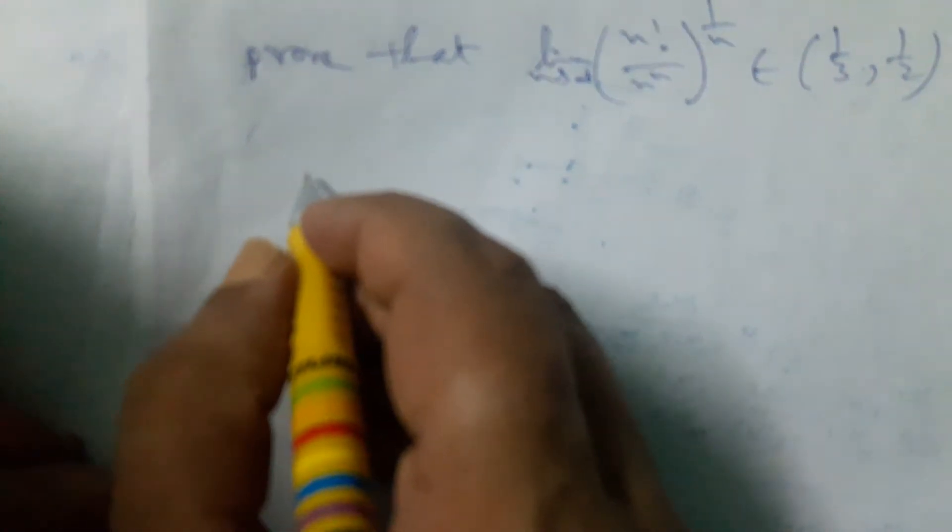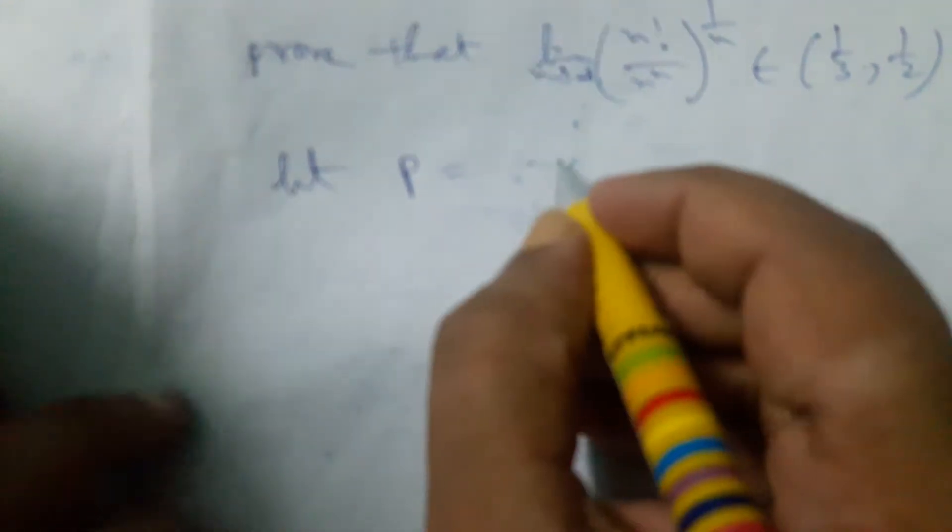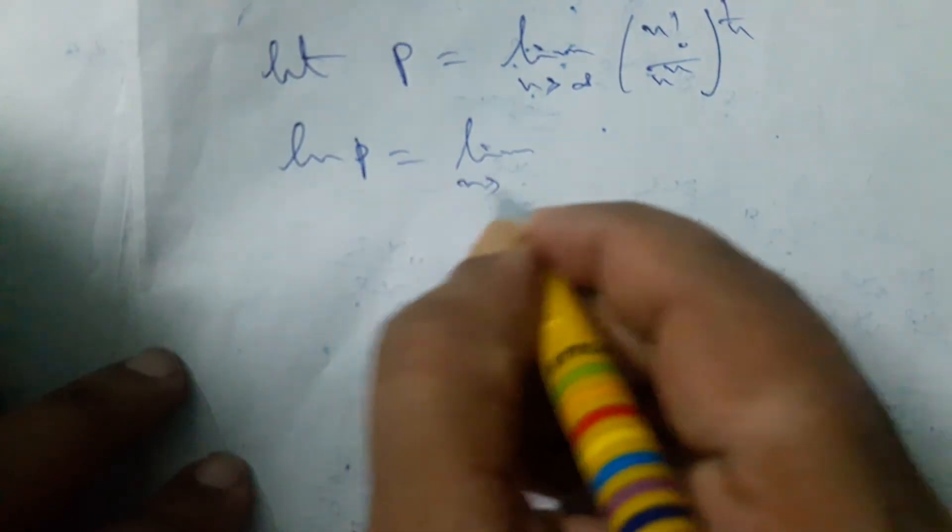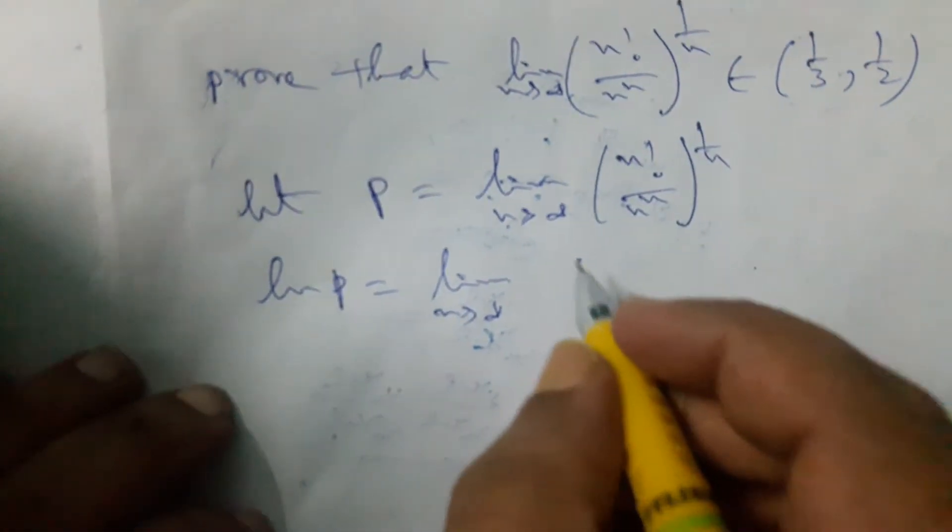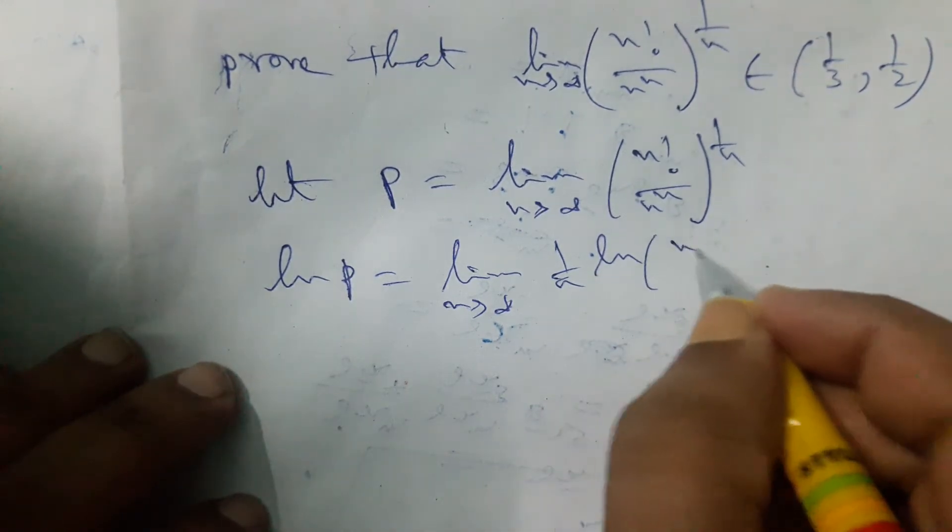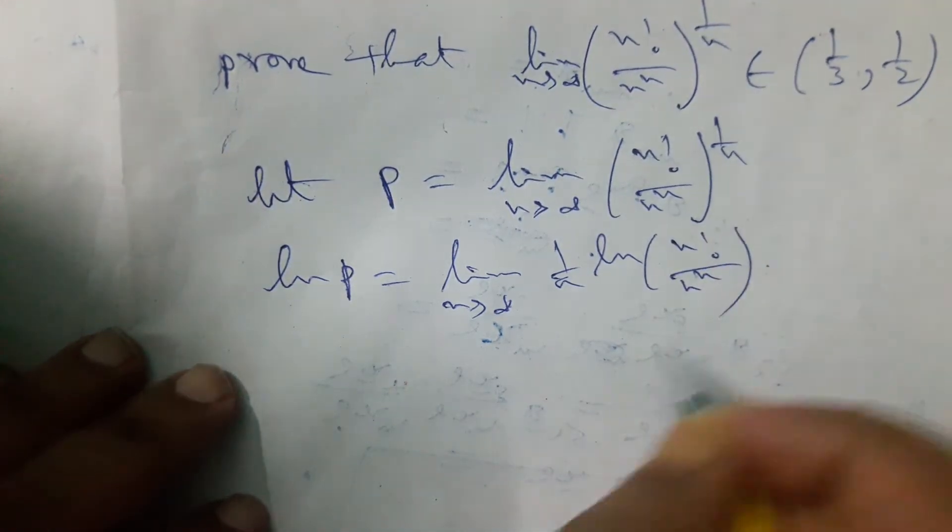At first, let us take it as a quantity. Let P is equal to limit as n tends to infinity, n factorial by n to the power n, whole to the power 1 by n. Taking logarithm from both sides, then ln P will be limit as n tends to infinity, 1 by n, ln of n factorial by n to the power n.